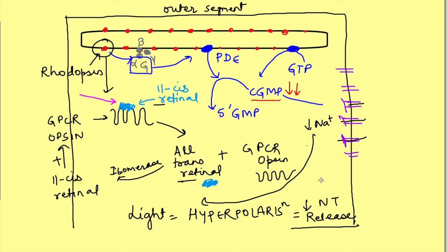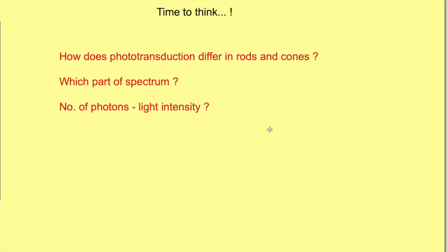Now, this is the basics of phototransduction in the photoreceptors but some questions remain here. Do rods and cones respond to photons from the entire visual spectrum equally or differently? Secondly, how do they respond to different intensities of light?